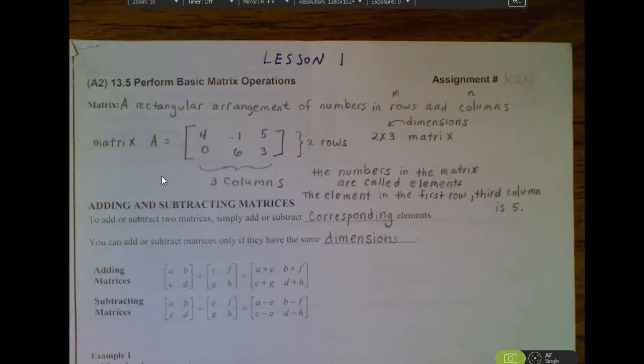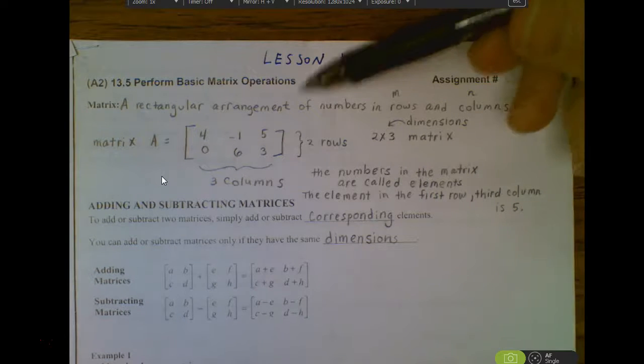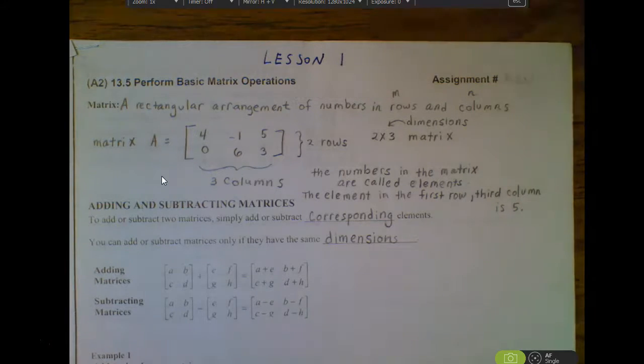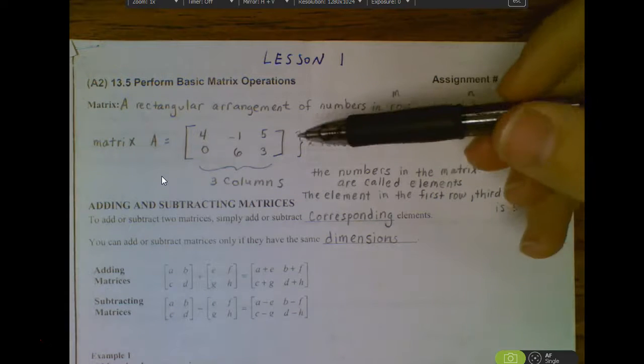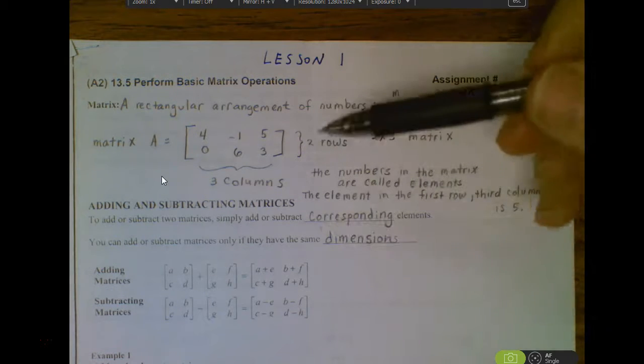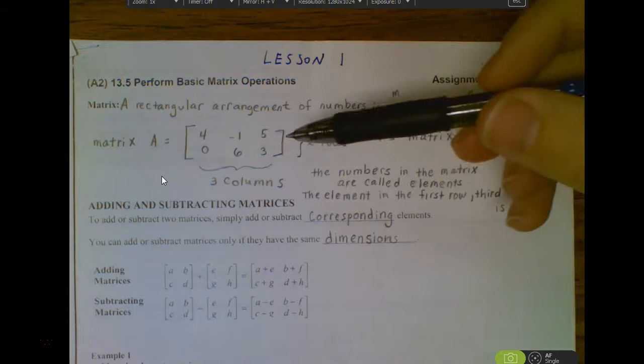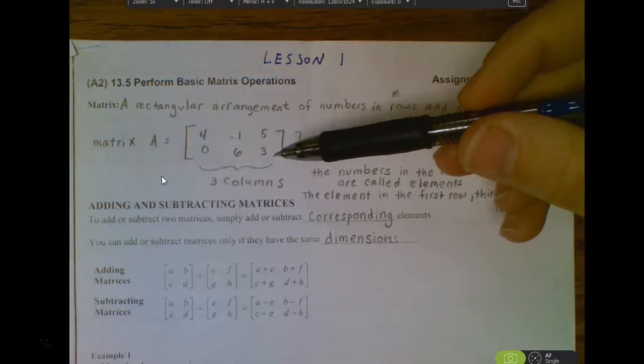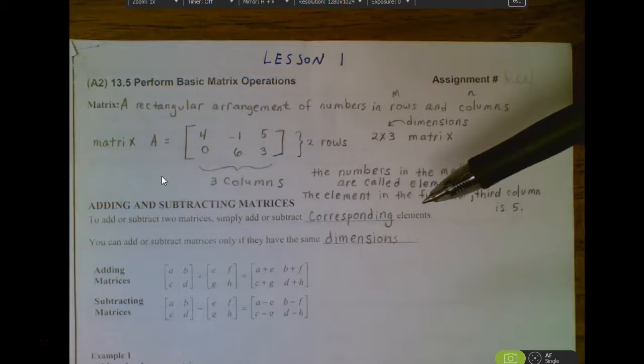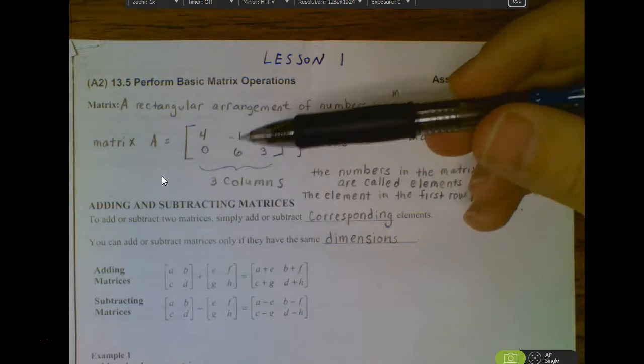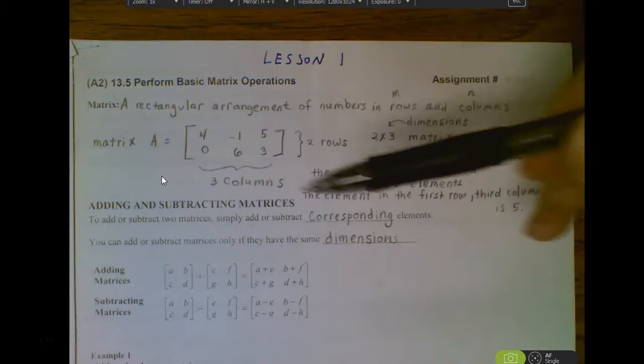It's just identifying what is a matrix. It's just a rectangular, what we call an array of numbers. We have rows and columns. The rows are the ones that go from left to right. You can see this one had two rows in it. This would be the first row and this would be the second row. The columns are the ones that go up and down. This would be column 1, this would be column 2, and column 3.